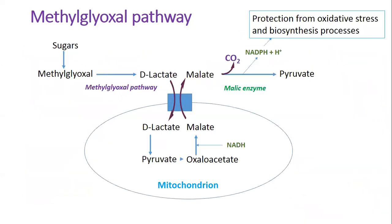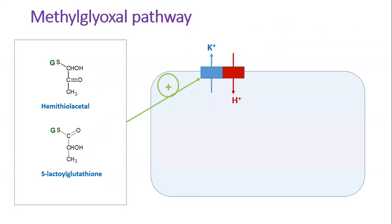Lactate can be converted to pyruvate, and this pathway managing methylglyoxal concentration appears to be the main one. It was shown that both yeast and mammalian mitochondria can convert D-lactate to other metabolites such as malate. Malate is exported from the matrix in exchange with cytosolic D-lactate. In the cytosol, malate can be used to produce NADPH via a malic enzyme-catalyzed reaction, which can be essential for the maintenance of redox balance and biosynthesis processes.